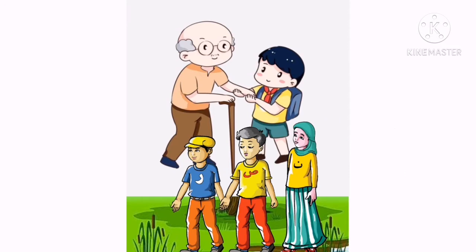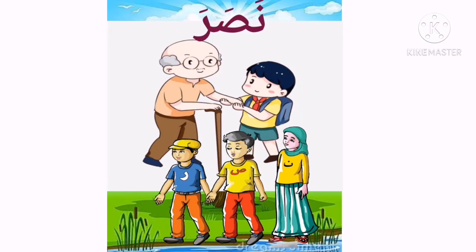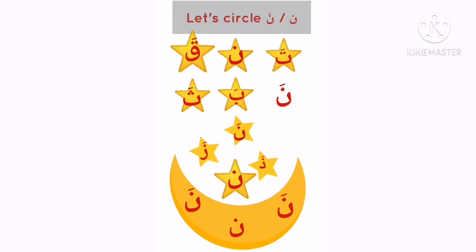Can you please read these letters together? Okay, how to read? Na, Zainab and Laila. One more: Na, Zainab and Laila. So let's circle Noon and Na. Are you ready? Okay.